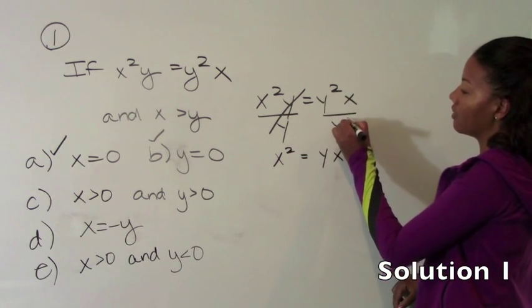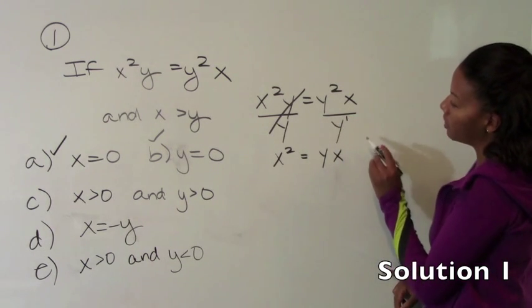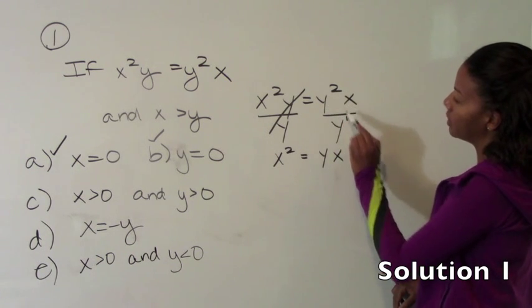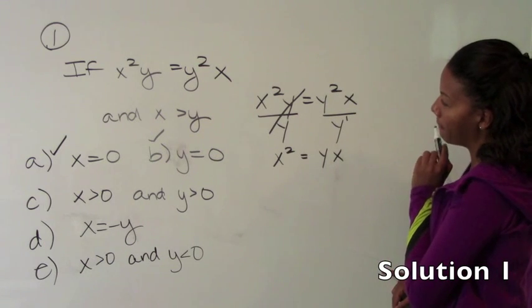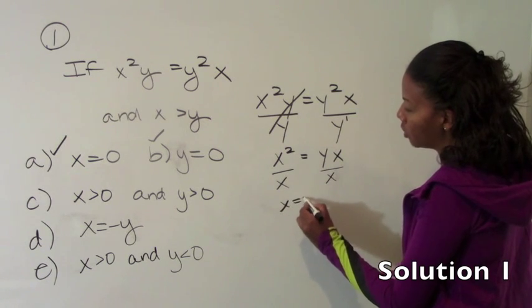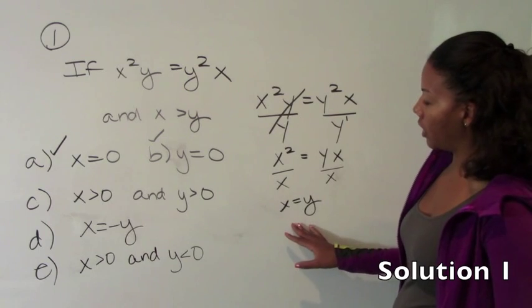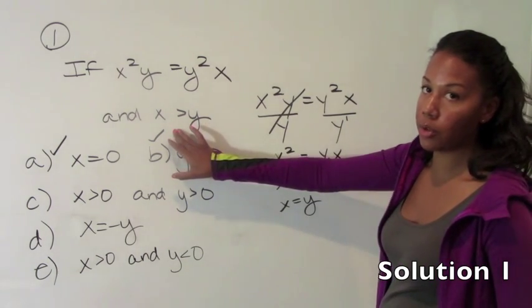Because this y squared divided by y is simply y. Remember that when we're dividing by variables with exponents, we simply subtract the exponents. So we end up getting y to the first in the numerator. Now we're going to divide both sides by x. We end up getting x equals y.